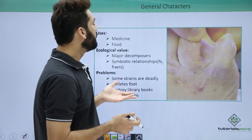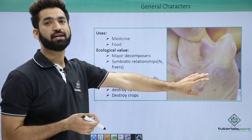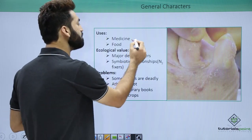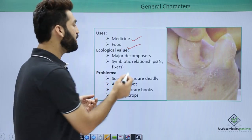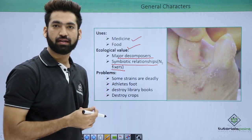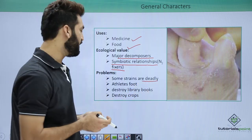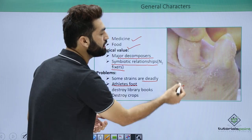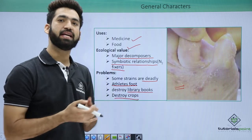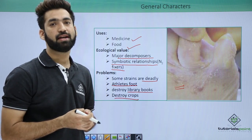There are many uses of fungi but also harmful effects. Athlete's foot is an important disease caused by a Deuteromycetes member. Uses include medicine, food, and ecological roles — most fungi work as decomposers, and many fix nitrogen symbiotically or asymbiotically. However, some fungal strains are deadly, and fungi can destroy books and crops. In the next session we will discuss different nutritional activities in fungi.